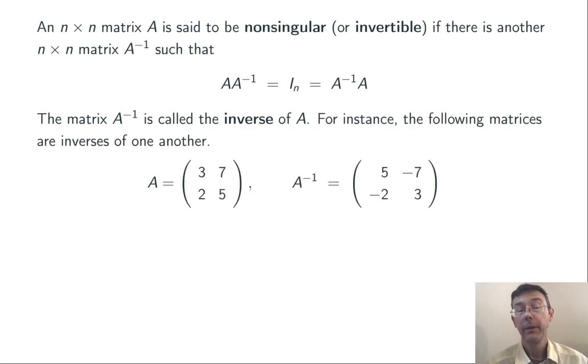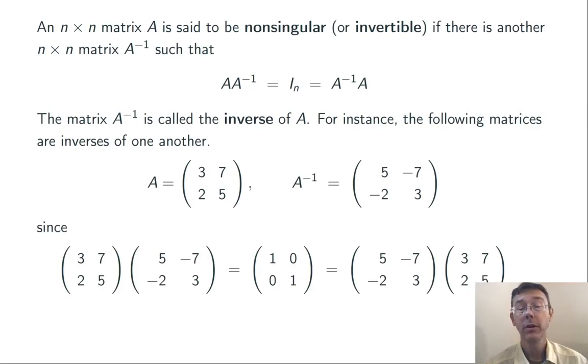Here's an example. The matrices A and A^(-1) here are actually inverses. If we multiply them in either order we get the 2 by 2 identity matrix back: 1, 0, 0, 1.